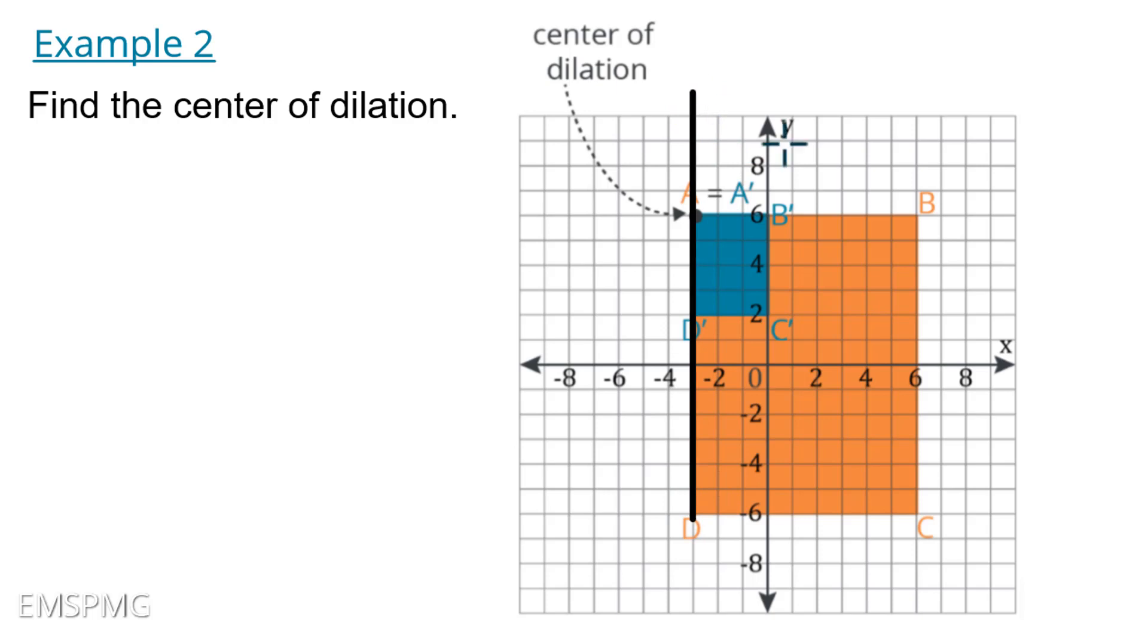So D prime to D and then B prime through B and then C prime to C and we see that they all intersect right here. So this one, the center of dilation is actually on the corner of both the image and the pre-image.